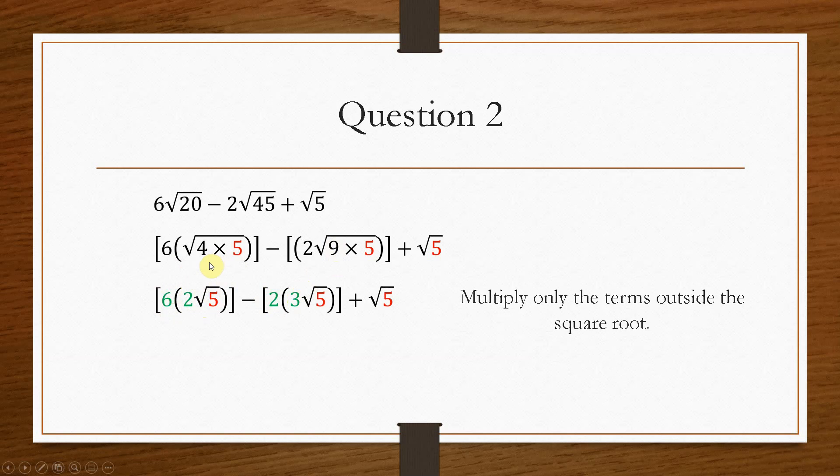So what happens is this will only multiply the value outside of the surd. It doesn't have any effect on the value inside the surd. So that's why these numbers are color-coded in green. So that is where the 12 came from, the 6 times 2, and the minus 6 came from the minus 2 times 3.